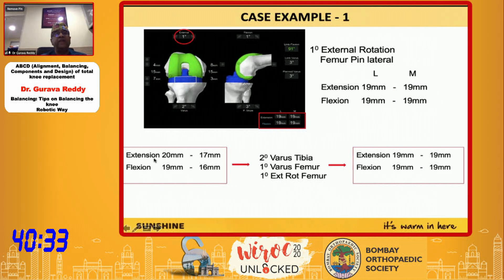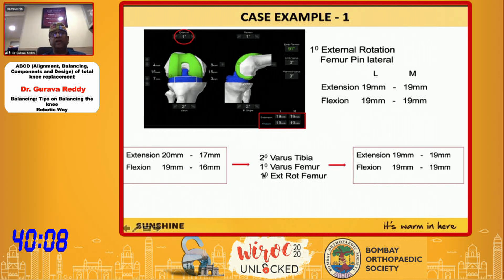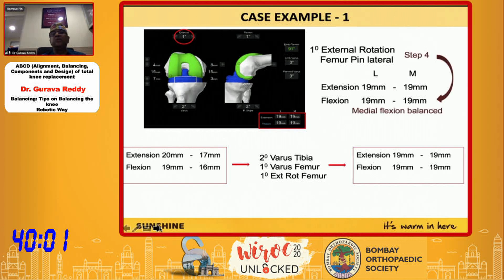Starting from 20 mm, 19 mm in extension and 17 mm, 16 mm on the medial side, everything becomes 19 in all four quadrants by simply applying two degrees varus to the tibia, one degree varus to the femur, and one degree external rotation of the femur — three steps, all quantified and visible on the screen. The result is a completely balanced knee.